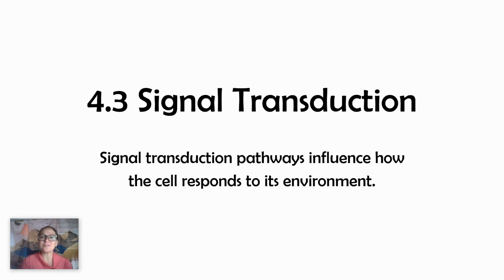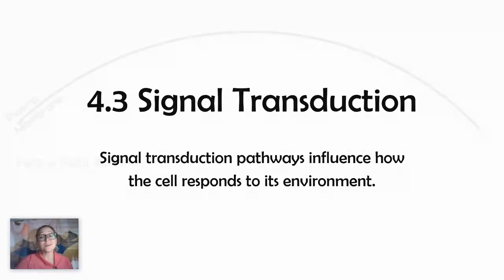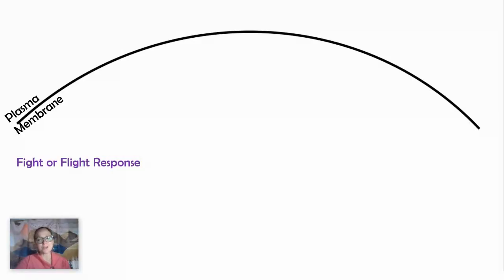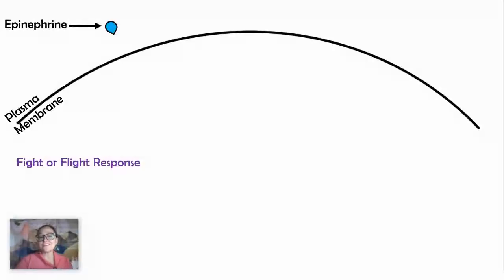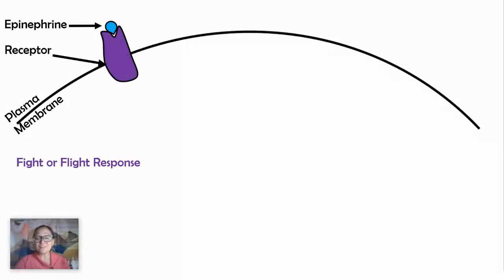In this video, which is the third in my cell communication series, we're going to be looking at how signal transduction pathways are used to help cells respond to their environment. In our first example, we're going to use epinephrine in the fight-or-flight response, which you should be familiar with from my previous video. If not, it might be helpful to watch video 4.2. Epinephrine is a hormone released in times of immediate stress, allowing our body to respond in a fight-or-flight situation.